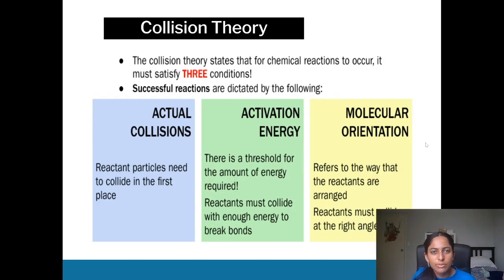In terms of collision theory, you mainly need this when explaining equilibrium questions. Collision theory has three main factors: you have actual collisions, you have your activation energy, and you also have your molecular orientation. So actual collisions is whether it's actually colliding, activation energy is whether it's meeting the energy required or going above that energy threshold, and molecular orientation is whether it's correctly arranged so that when they do collide they're able to break their bonds and form new bonds.